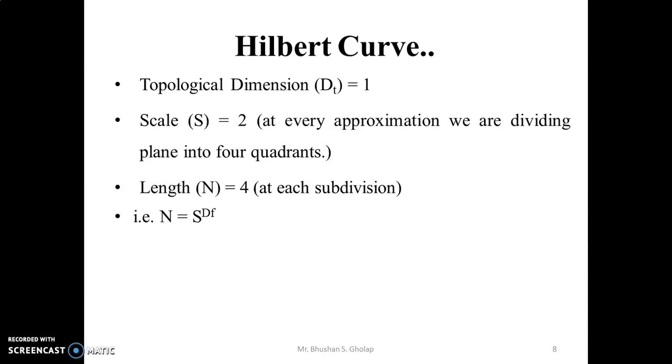capital N, that is length N equals scale S raised to Df. What is Df? Df is nothing but fractal dimension. So, N = 4, S = 2 raised to Df. And so, Df equals 2. Fractal dimension of Hilbert curve is 2. So, topological dimension Dt = 1 and fractal dimension Df = 2 for the Hilbert curve.